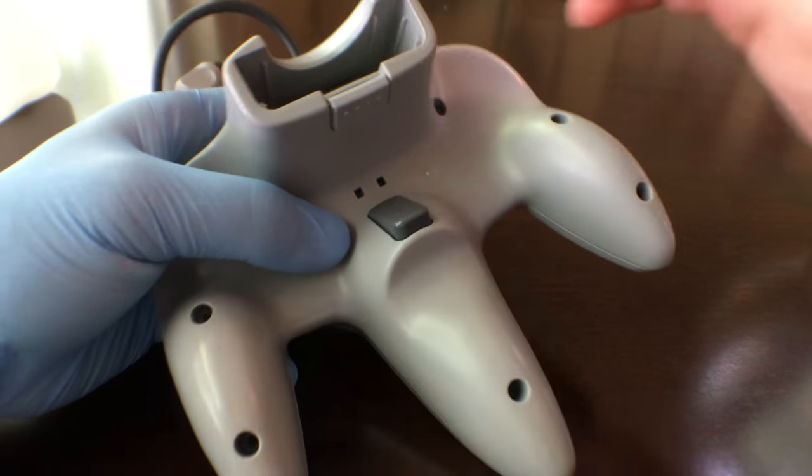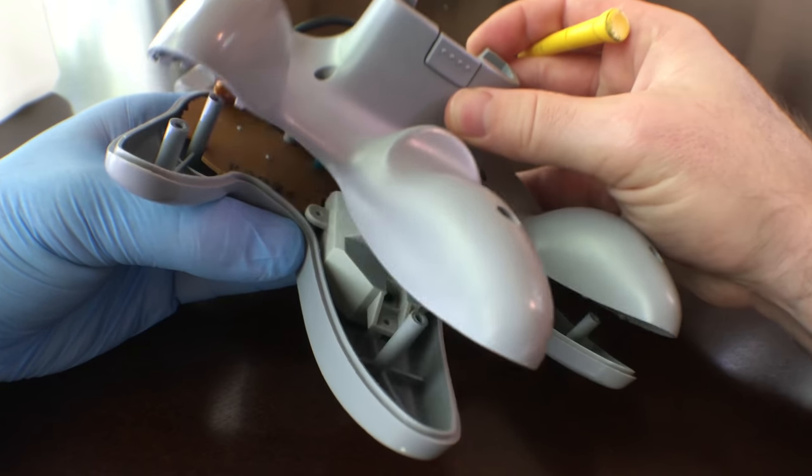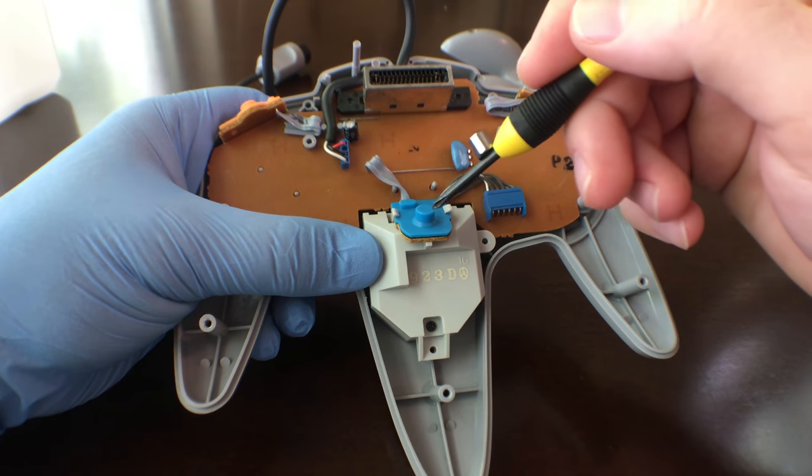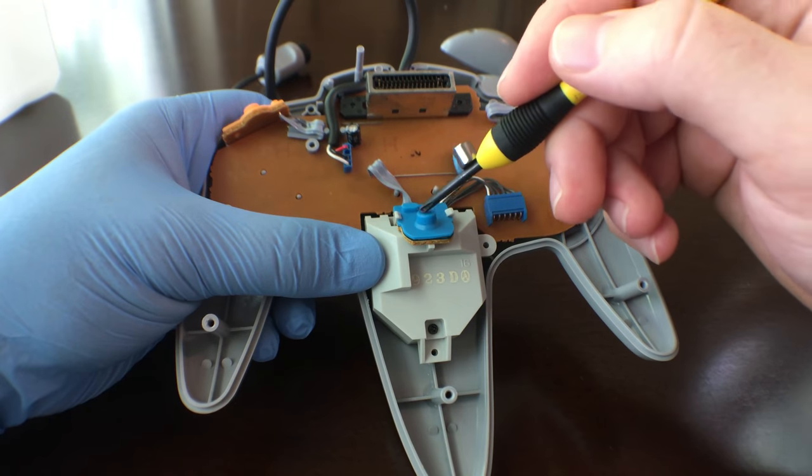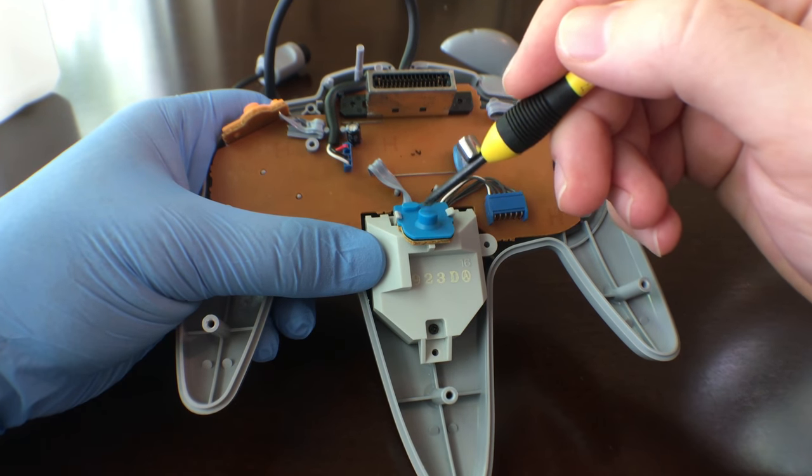You take the nine screws out and then you lift the rear shell straight up.